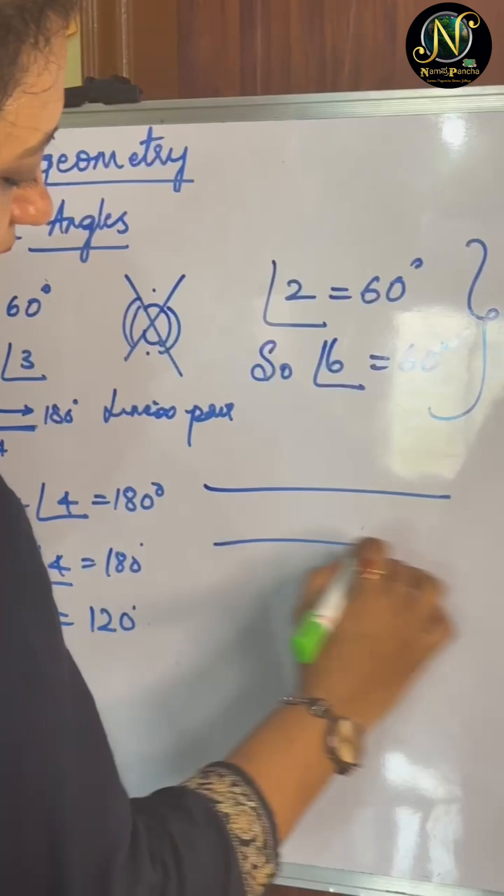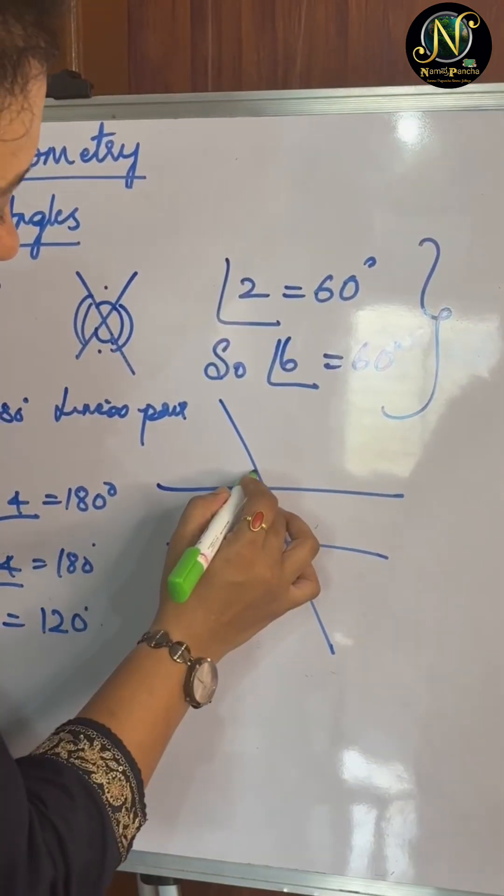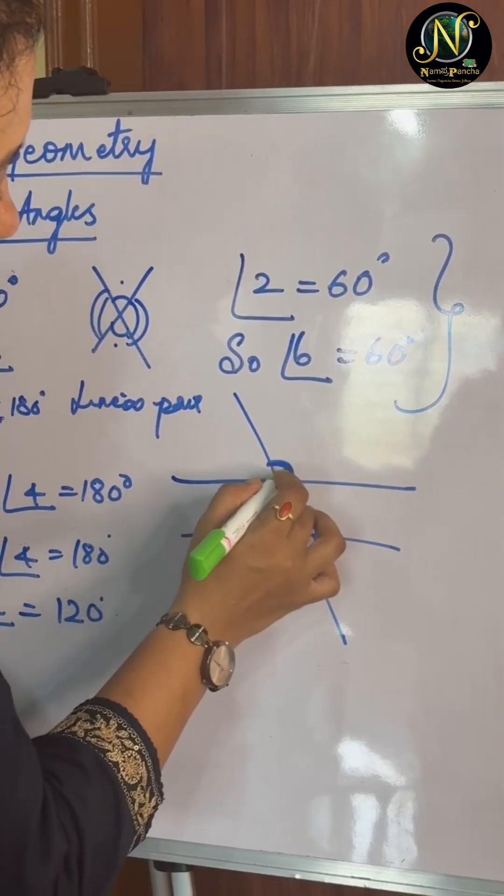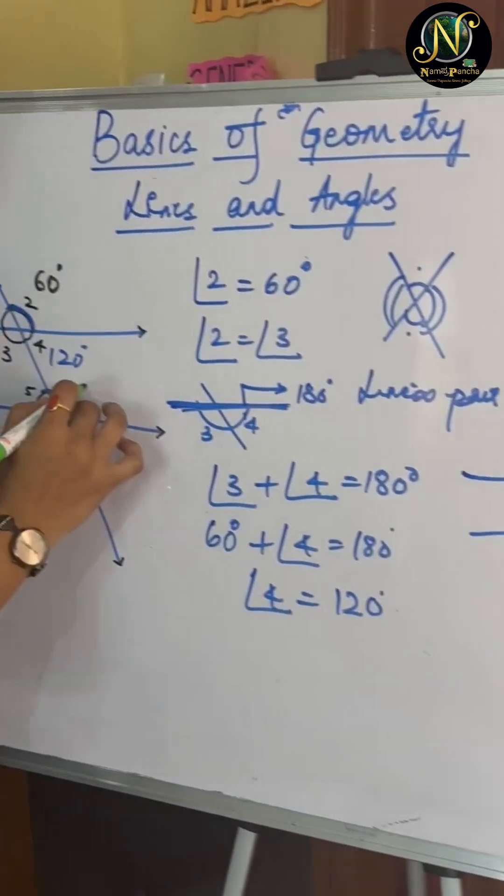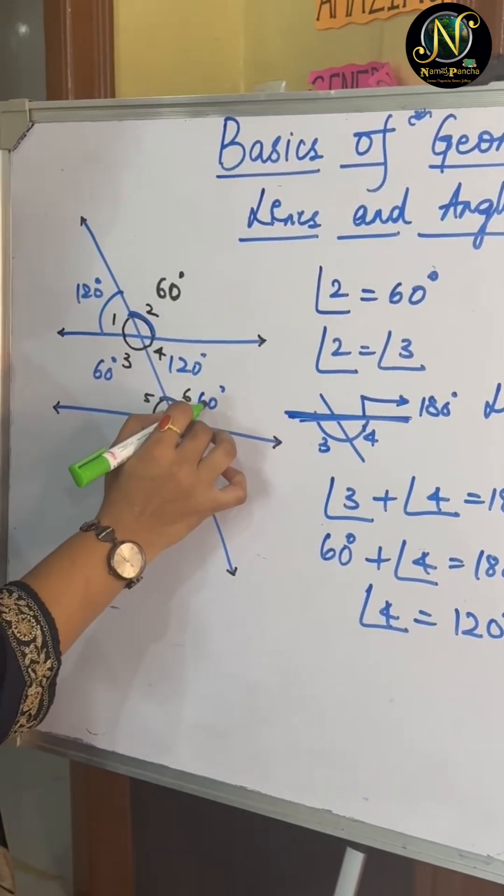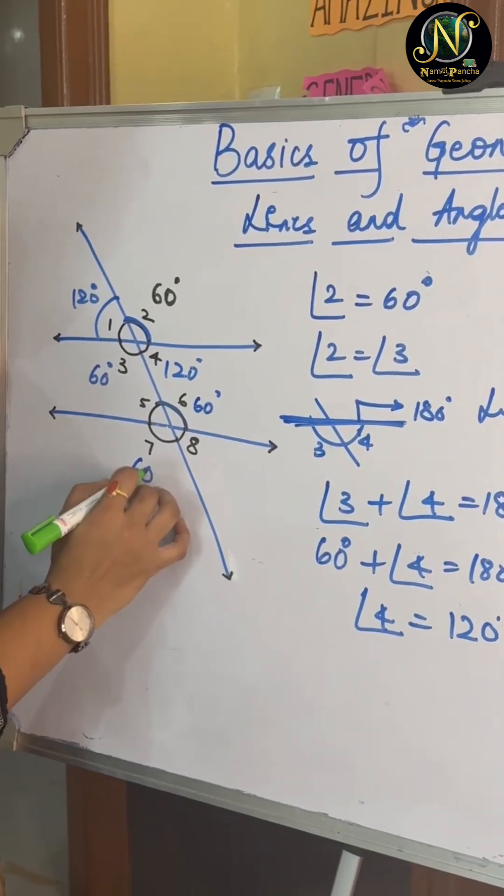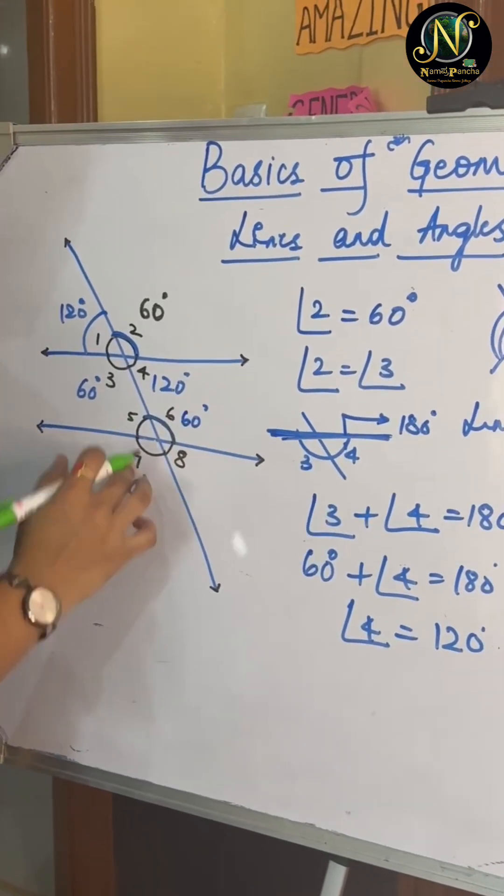That means when a line is intersecting other line, these two are corresponding angles. So they both will always be same. So now 6 is also 60 degrees. This is 60 degrees. So 7 will also be 60 degrees because they are vertically opposite.